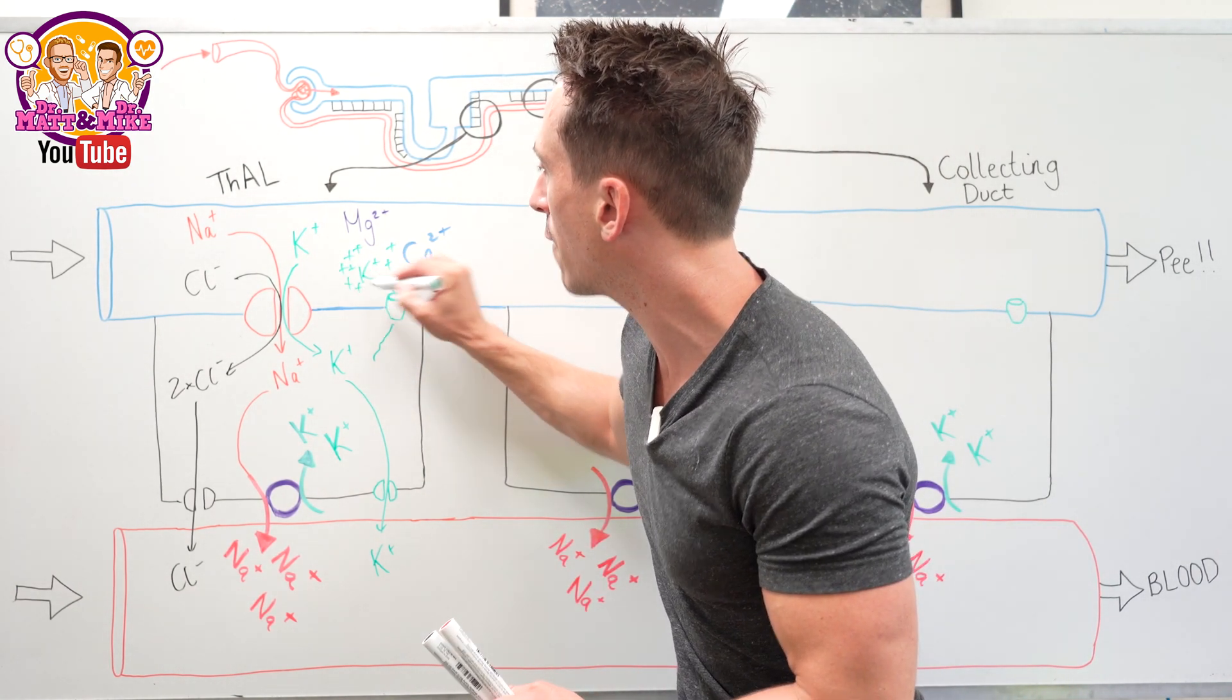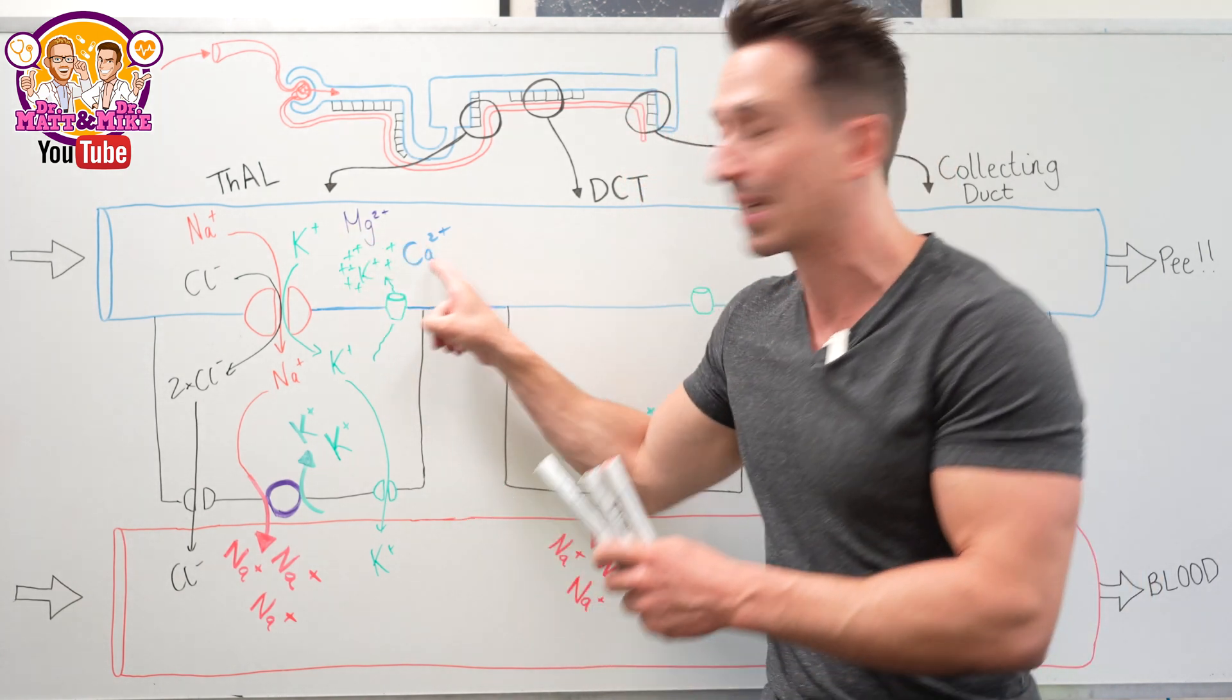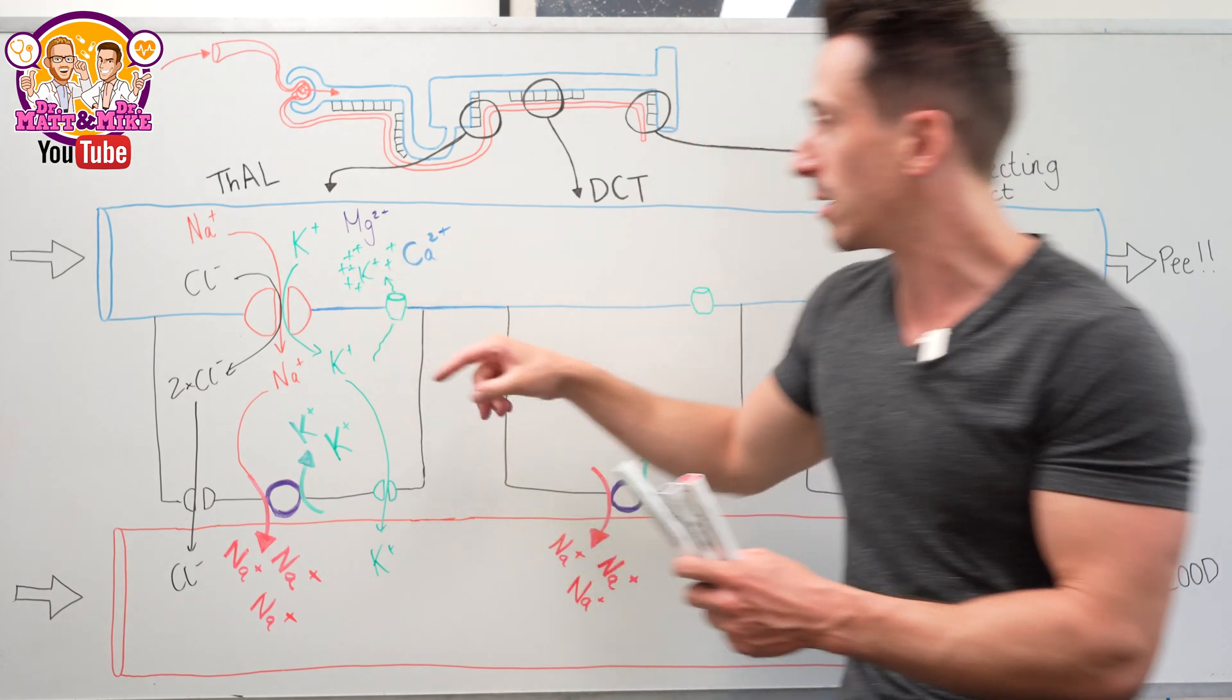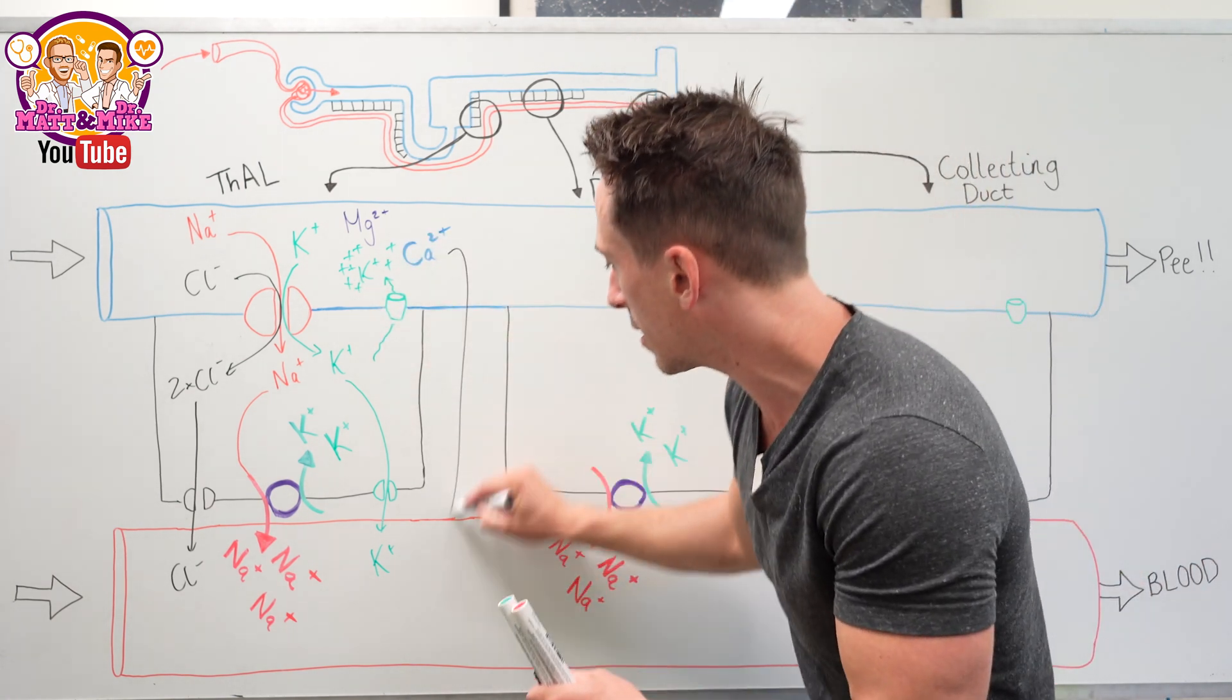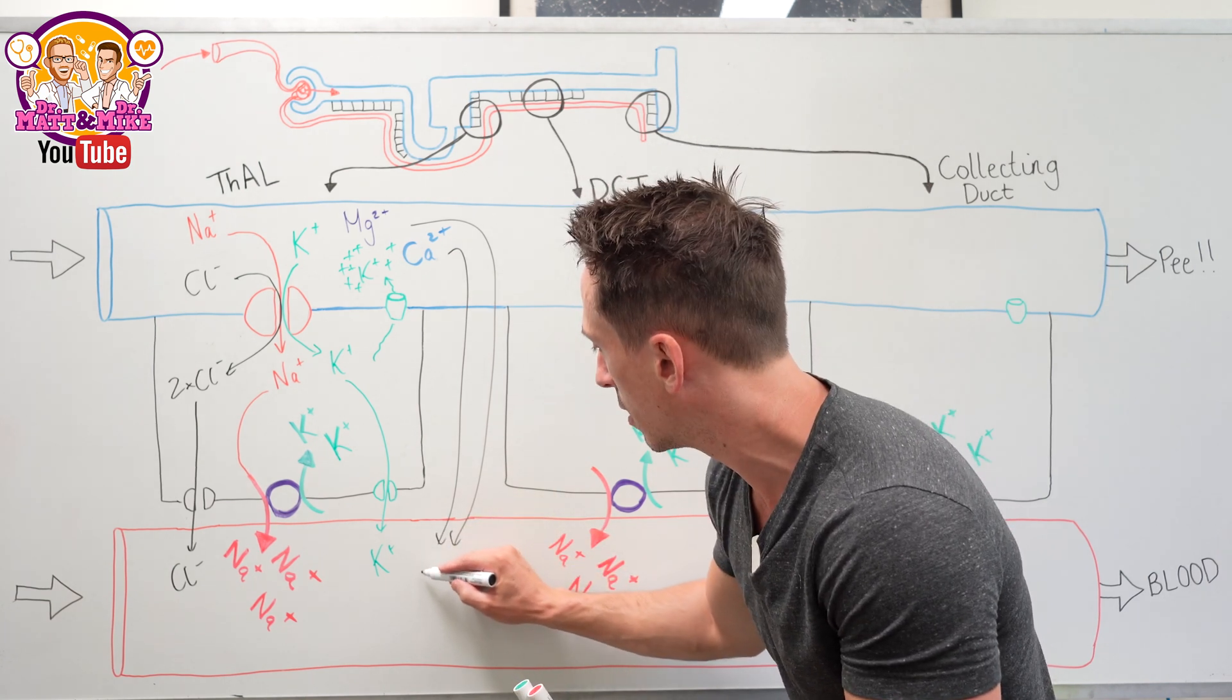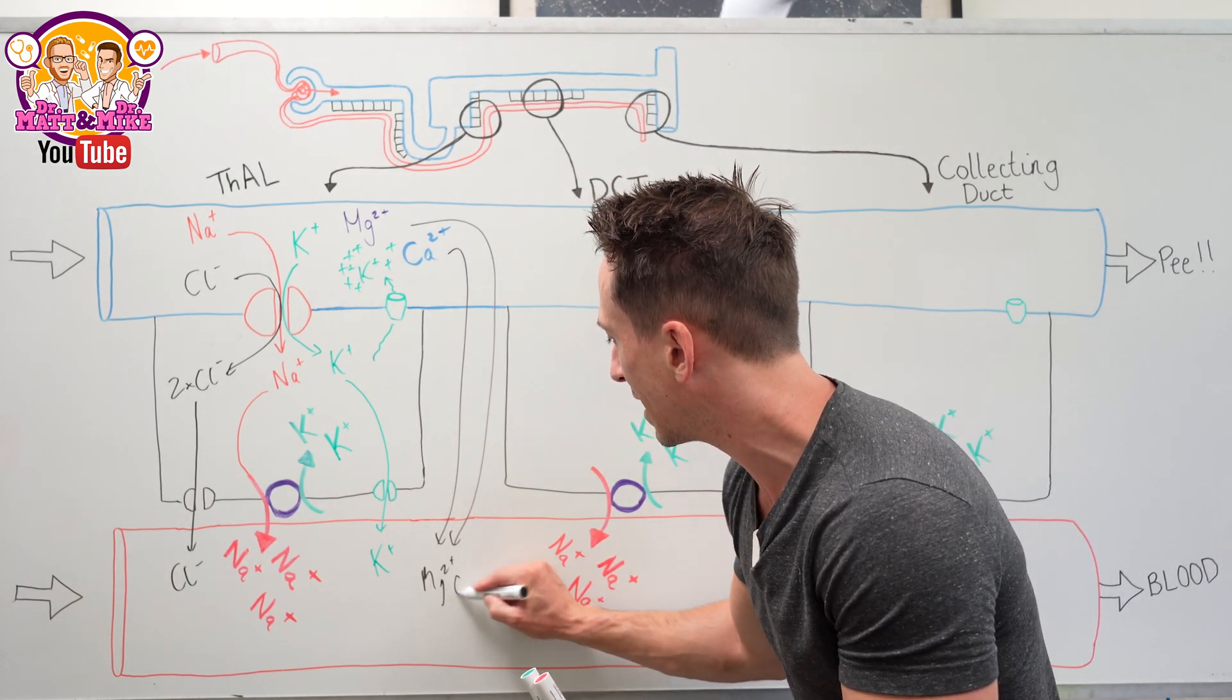This is important because you have other positive ions like magnesium and calcium, and they're repelled by this positive charge that potassium brings, so they get forced between the cells into the bloodstream—paracellular movement. This is how we reabsorb magnesium and calcium.